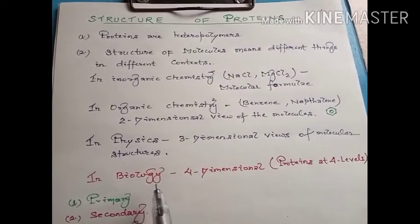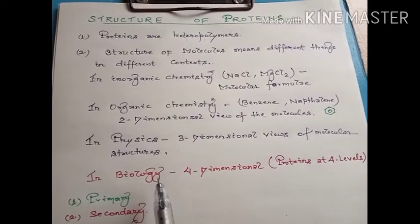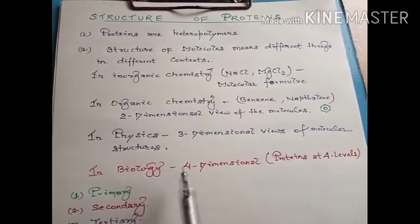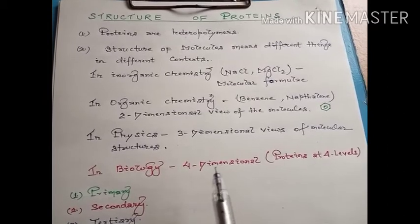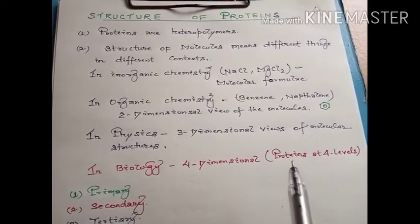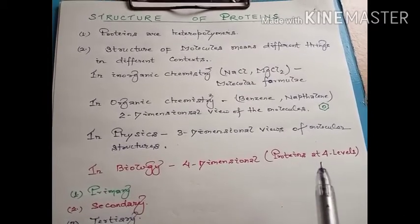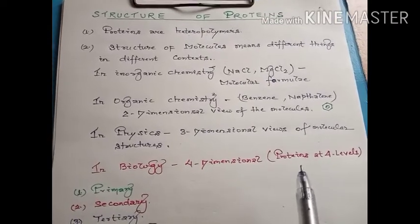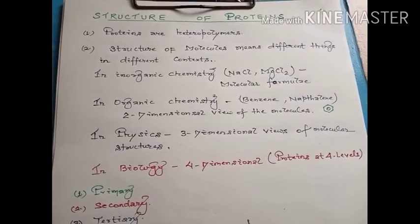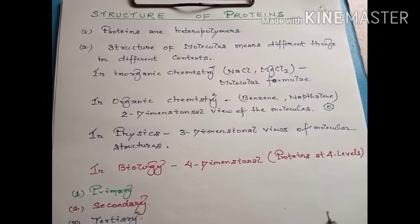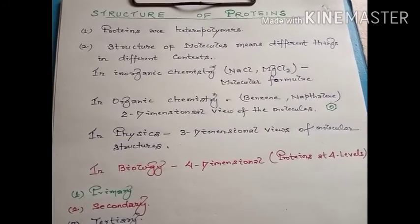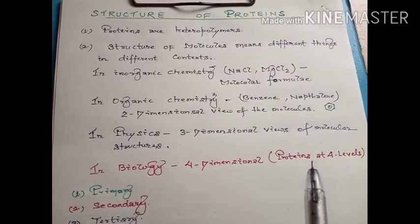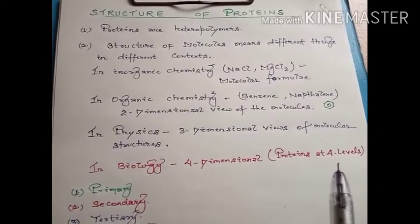But if we go for the structure of proteins in biology, we find that proteins are present at four different levels according to their structural organization within living beings. To understand the structure of proteins, let us try to understand what proteins look like at these four different levels.